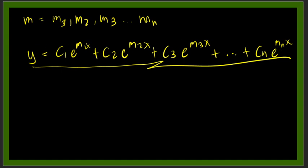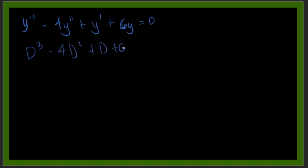Let's apply this one using an example. We have now this differential equation here: y triple prime minus 4y double prime plus y prime plus 6y is equal to 0. We will transform this one first into the D operator. We have D cube minus 4D squared plus D plus 6y is equal to 0.